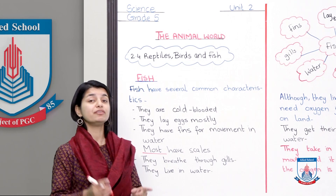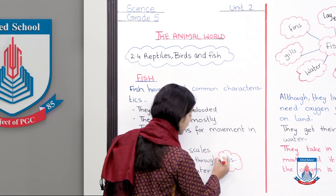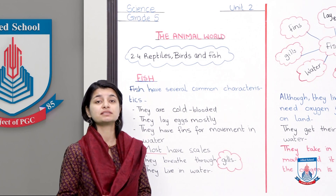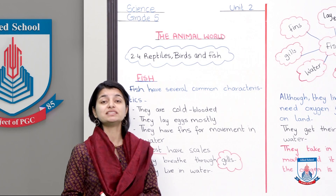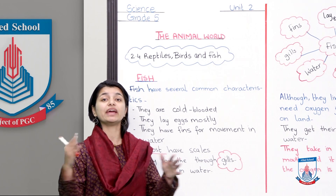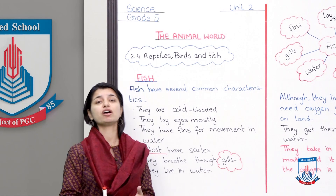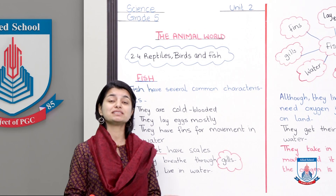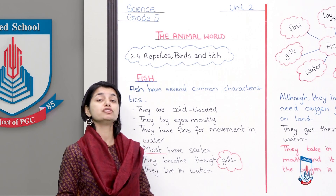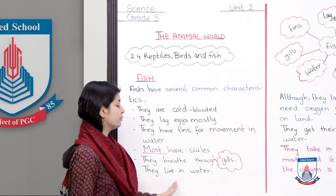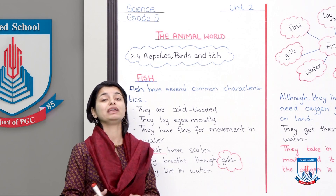Fish breathe through gills — now this is a key difference from reptiles. Most animals breathe using lungs, which take oxygen from air. But fish breathe through gills, which are able to take oxygen from water. This is necessary because fish live in water. Since they live in water, they need a different organ that can extract oxygen from water. Fish live in water and do not live on land.